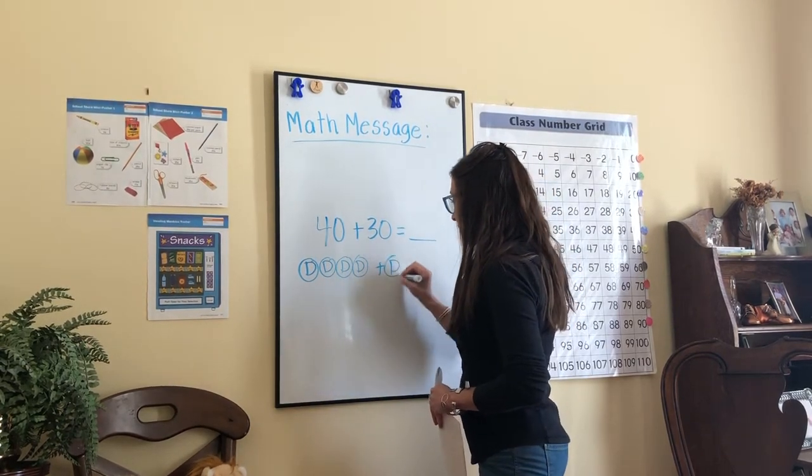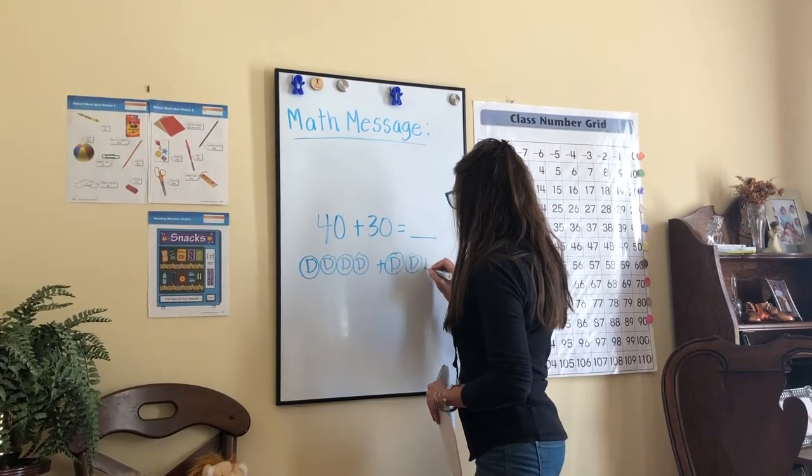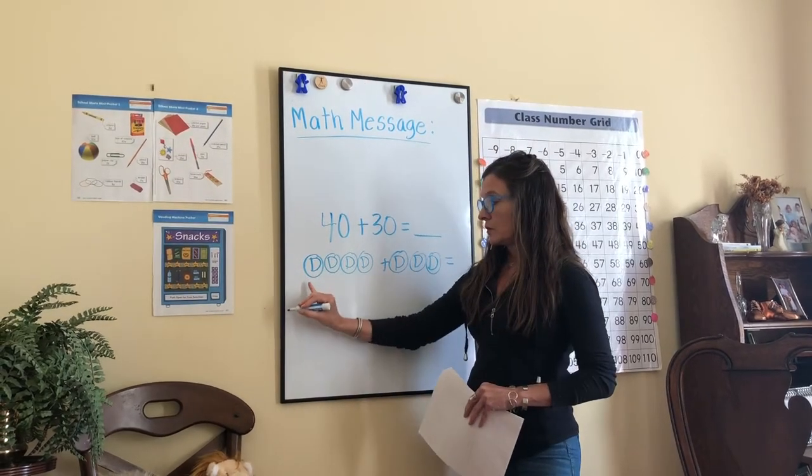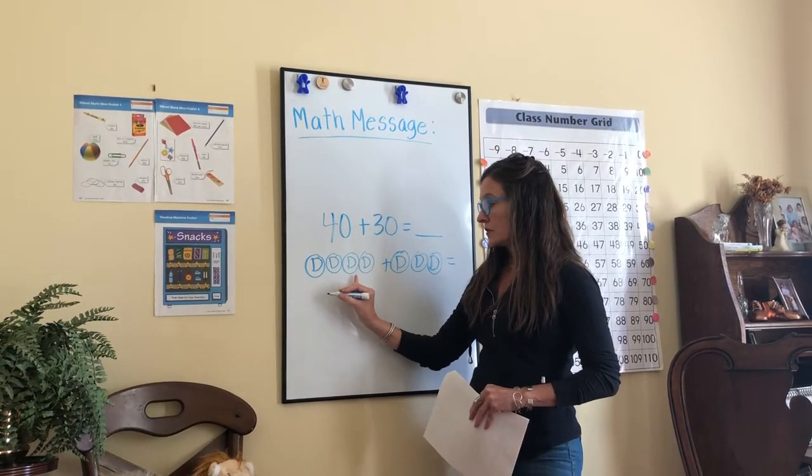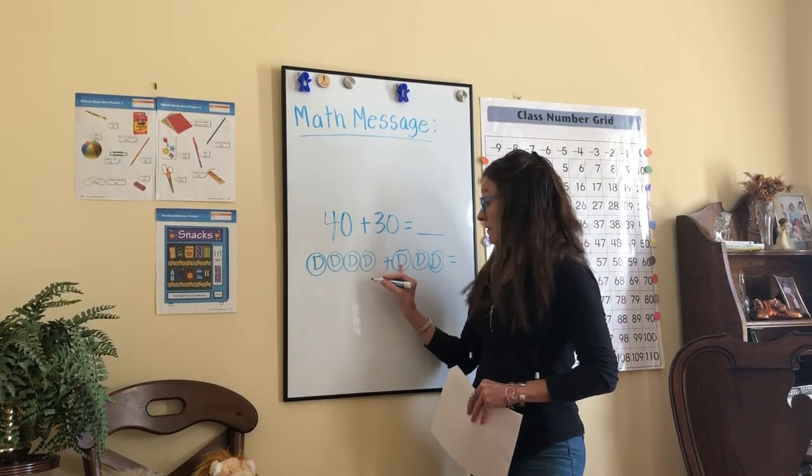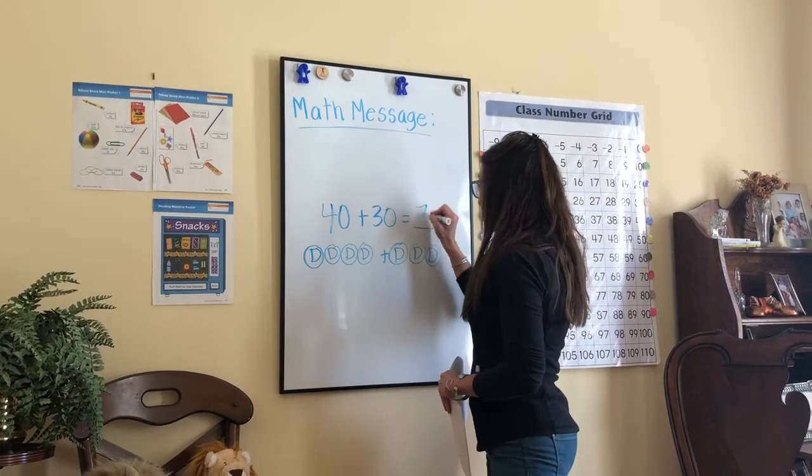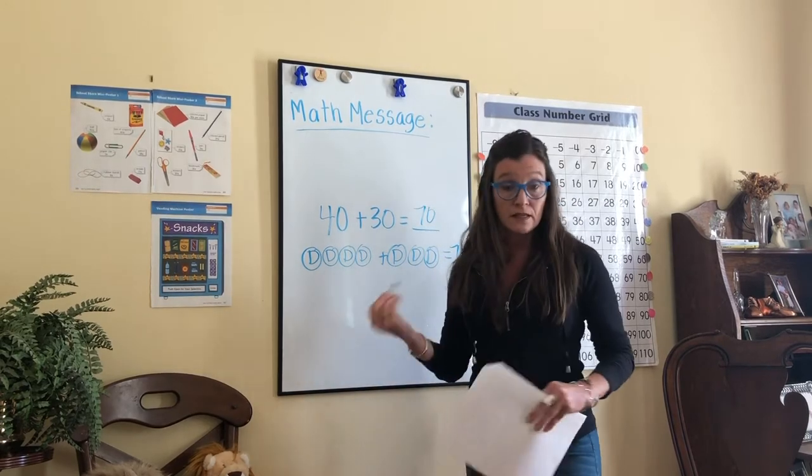How many dimes do we need for 40 cents? That's pretty easy: 10, 20, 30, 40. Now we have three more dimes, 30 cents. Now you can go back and count them all at the same time: 10, 20, 30, 40, keep going, 50, 60, 70. Again, your answer is 70 cents is now the new price of the granola bar.